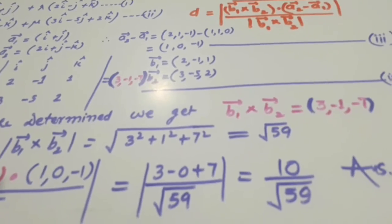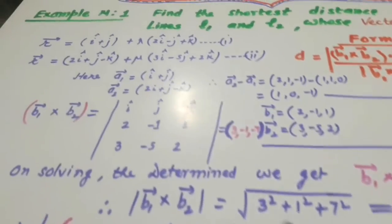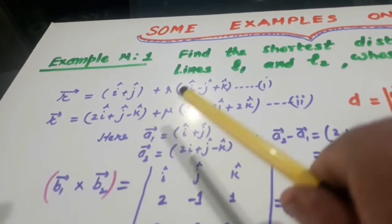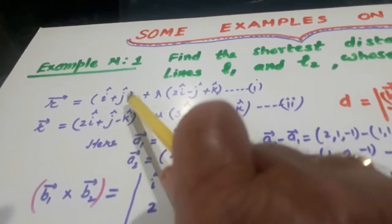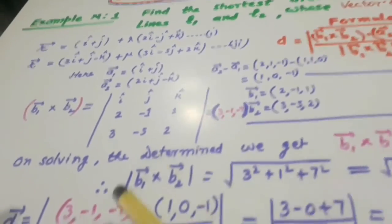Very easy to calculate. Very easy. So you only need to have the two equations in the vector form. Here is A1, here is A2, here is B1, here is B2. Only put in the formula and you get the result.